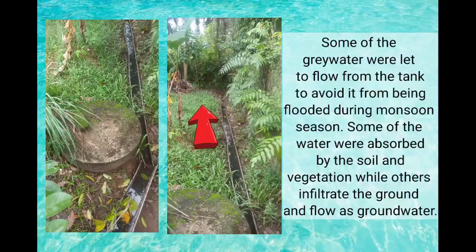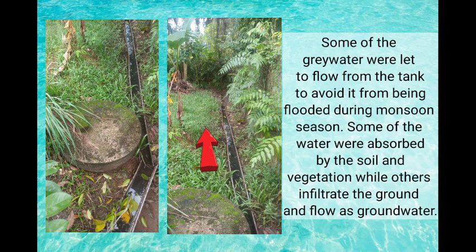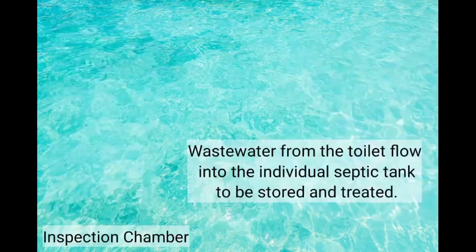Some of the greywater is let to flow from the tank to avoid it from being flooded during monsoon season. Some of the water is absorbed by the soil and vegetation while others infiltrate the ground and flow as groundwater.